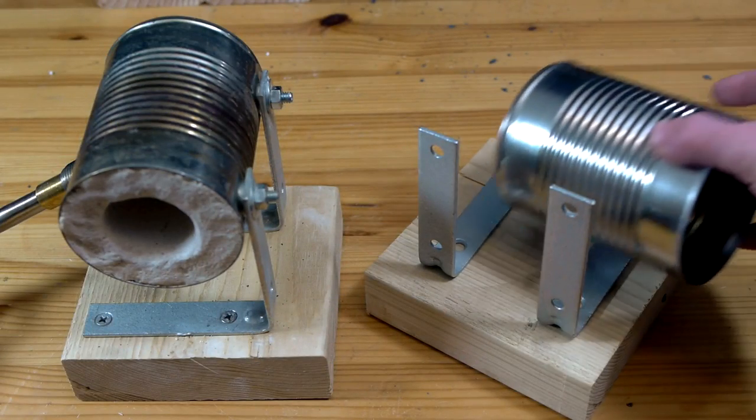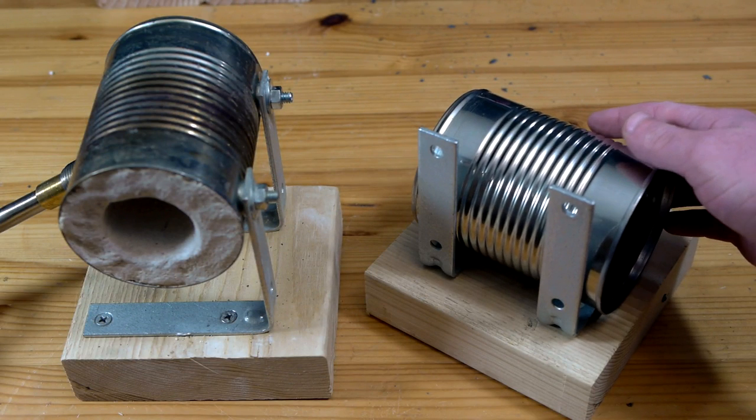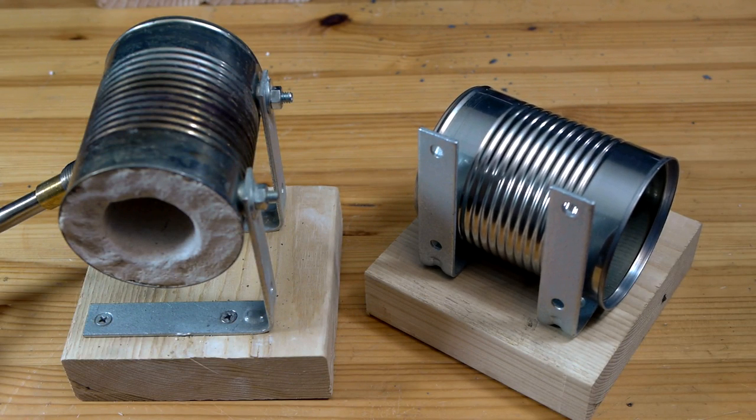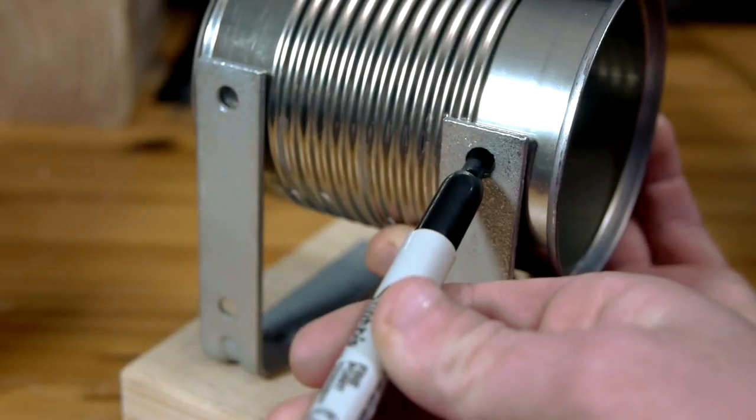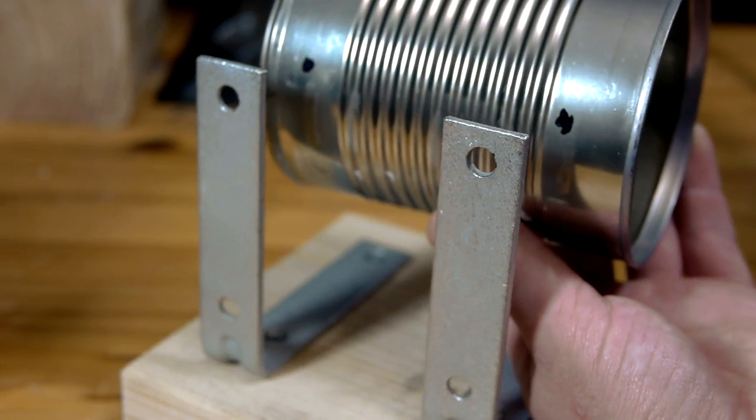The base of the forge is made by attaching two L-straps to a block of wood. The straps are spaced to align with the front and back of the soup can, and then screwed to the block. The can is then held up to the straps to make the marks where it will bolt on.